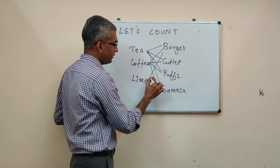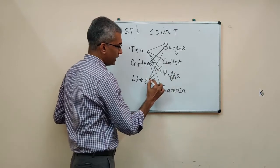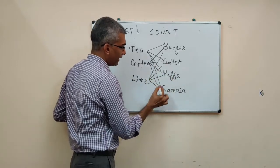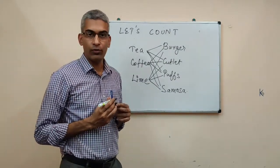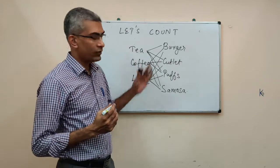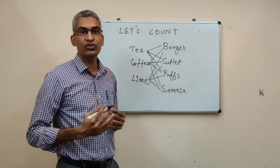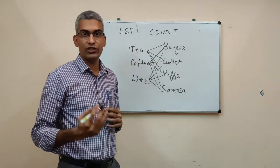Lime and burger, nine, lime and cutlet, ten, eleven, and lime and samosa, twelve. Total number of possibilities are twelve. Now, we looked at each one of them, we basically listed them down, we used the enumeration approach here.